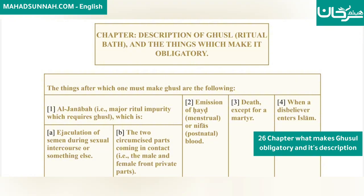1. Al-janabah, i.e. major ritual impurity which requires ghusl, which is: A. Ejaculation of semen during sexual intercourse or something else. B. The two circumcised parts coming into contact, the male and female front private part.